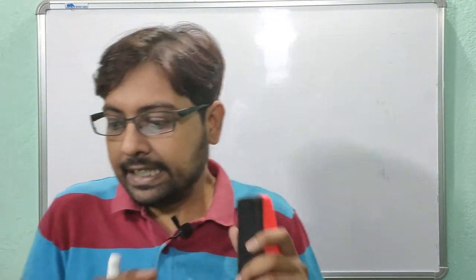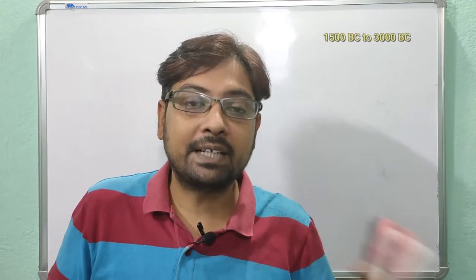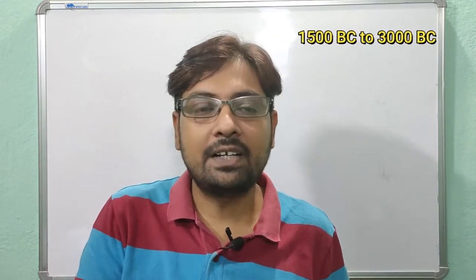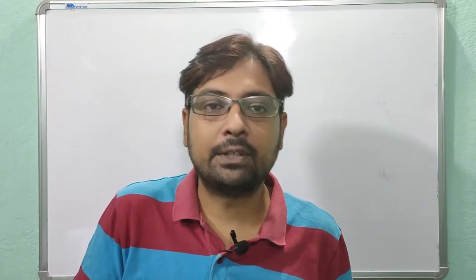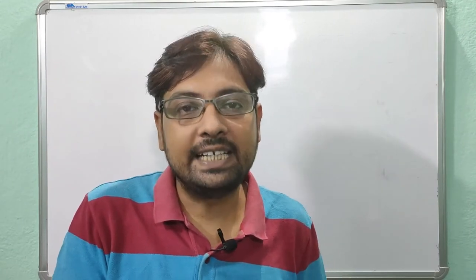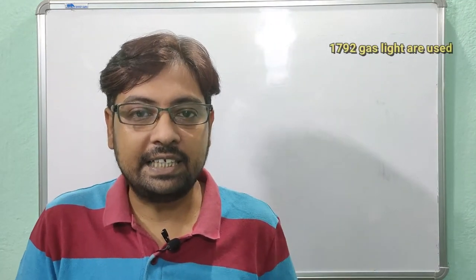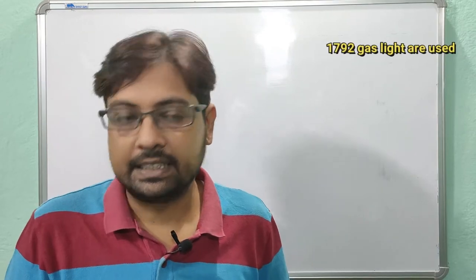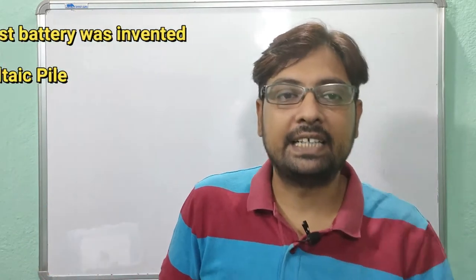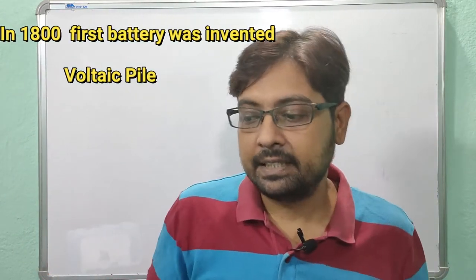Before we proceed, let us discuss the history of electricity. From 1500 BC to 300 BC, people used oil lamps or candles for lighting their homes. But in the year 1792, gas lights were used for lighting.